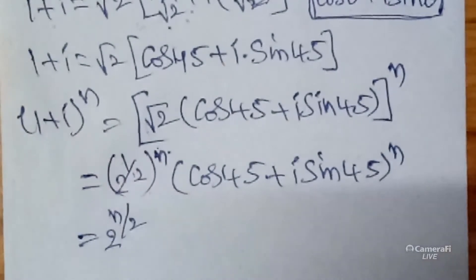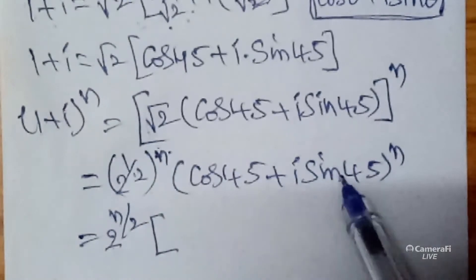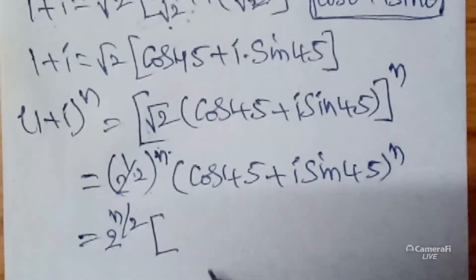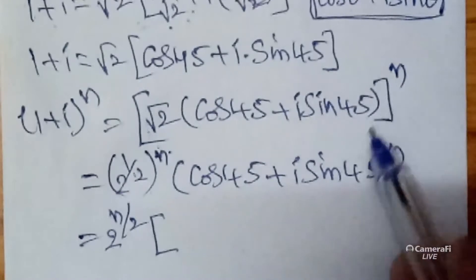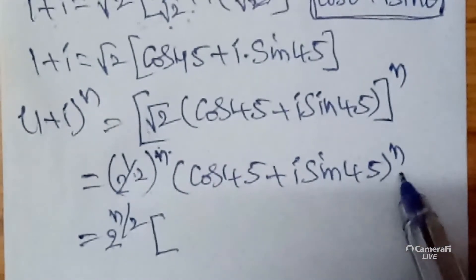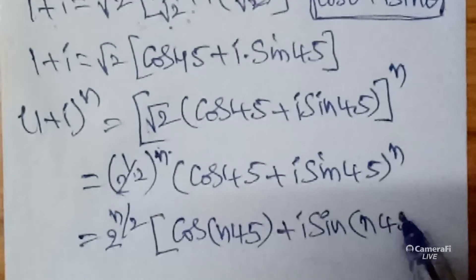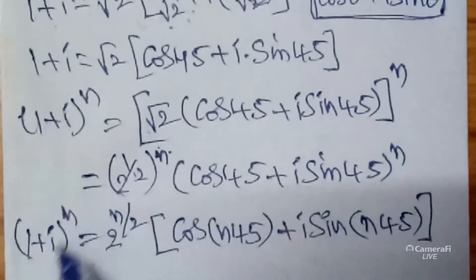Two powers you can multiply: 1 by 2 into n, we can write as n by 2. So we get 2 power n by 2, into — by De Moivre's theorem — cos theta plus i sine theta whole power n equals cos n theta. So this becomes cos of n times 45 plus i sine of n times 45. This value is equals to 1 plus i whole power n.